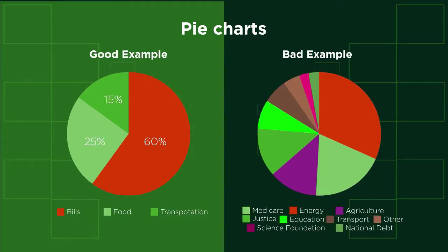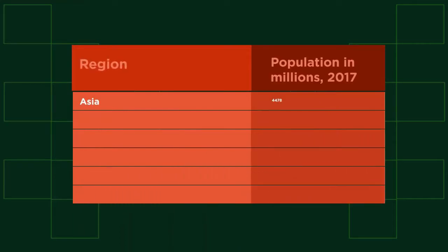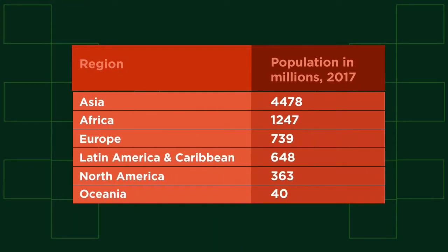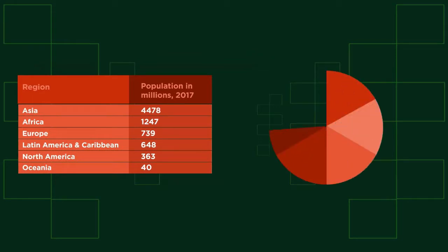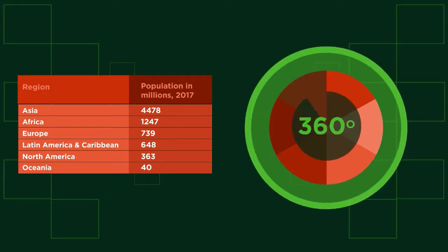They should only really be used when there are less than six categories. So let's turn this population data into a pie chart. We need to work out what size each sector of the pie is going to be. You should already know that there are 360 degrees in a circle, so we need to share this 360 degrees out amongst our different categories.